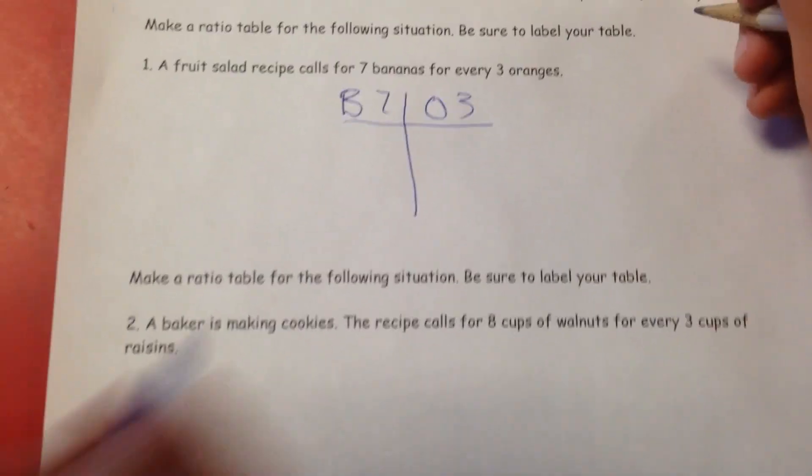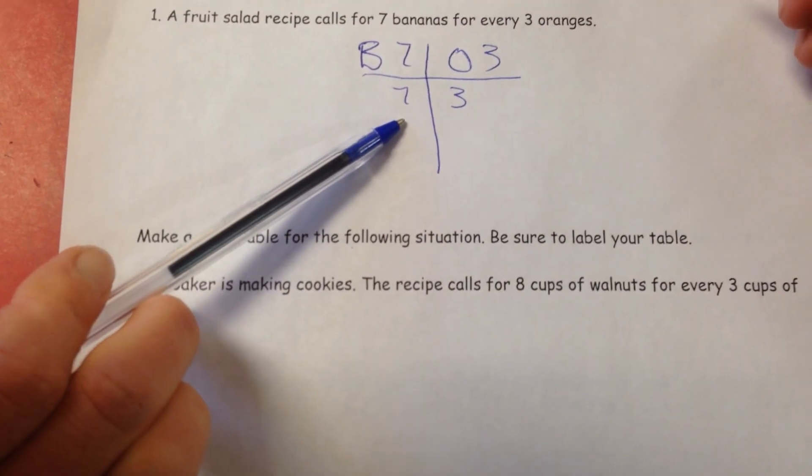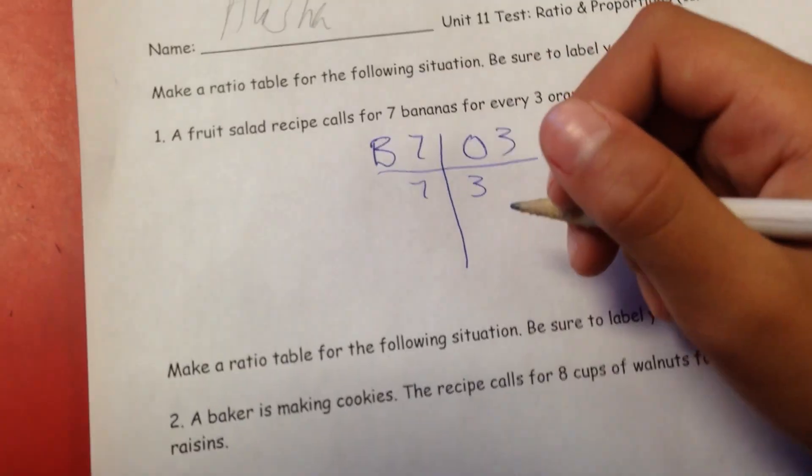You first start with seven and three, right? And then you're just going to skip count. Seven, 14, all the way down as much as you can.